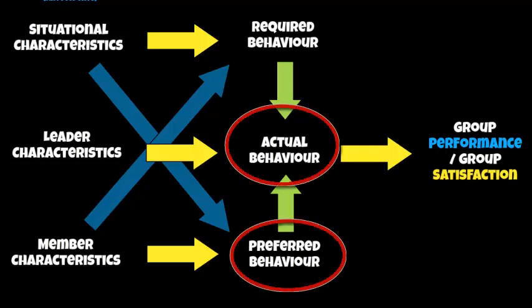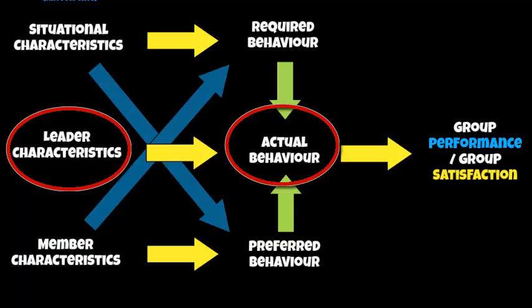The actual behaviour in the middle is also linked to leader characteristics. If a leader is a novice without much experience, that limits the choice of actual behaviour — if you've only ever practised autocratic style, your actual behaviour nine times out of ten will be autocratic because you haven't got any experience of anything else. However, if you're an experienced leader, your actual behaviour could draw from a wider range, making a decision based on situational characteristics, required behaviour, member characteristics, and preferred behaviour.